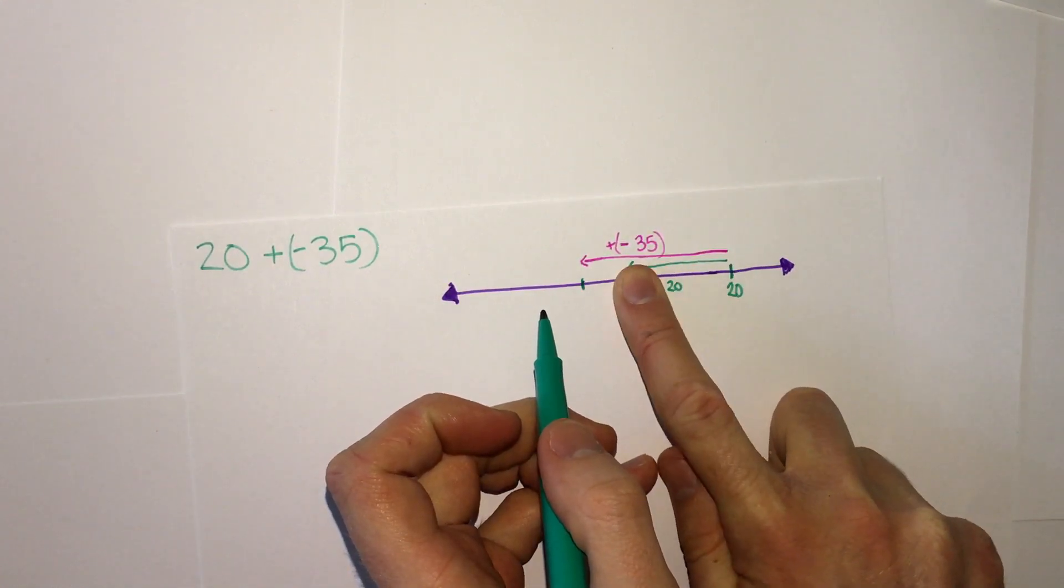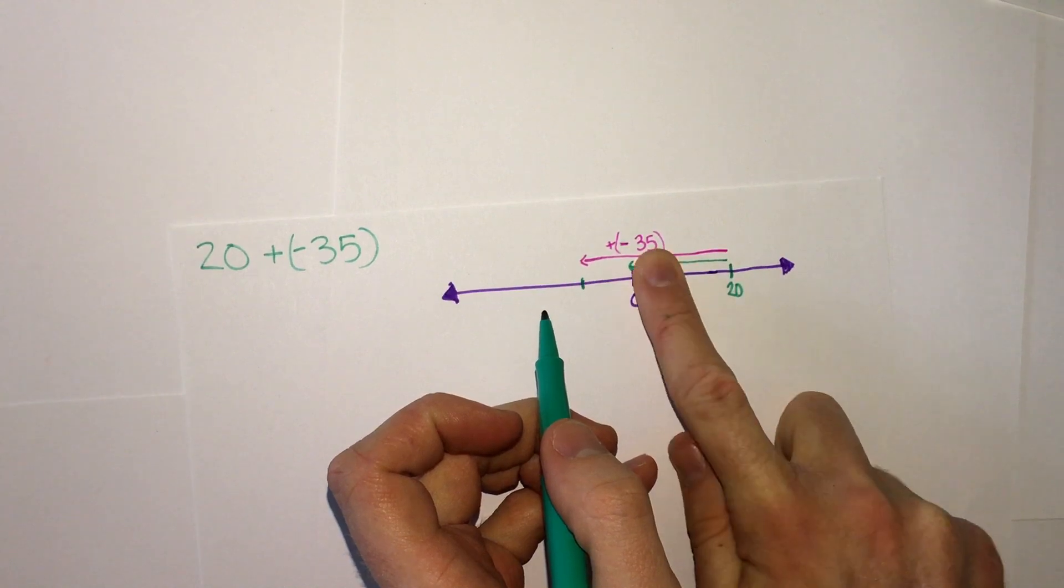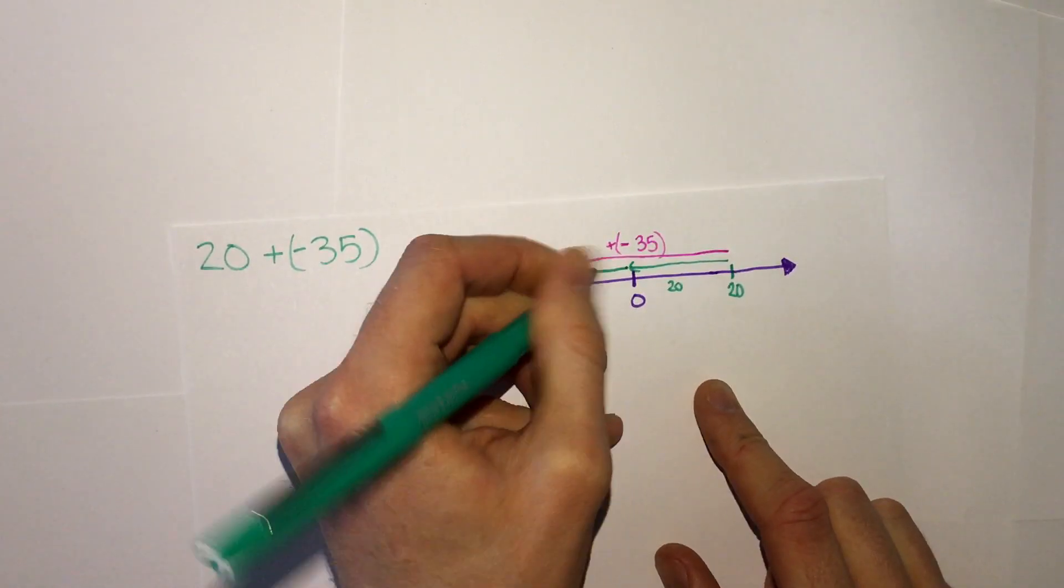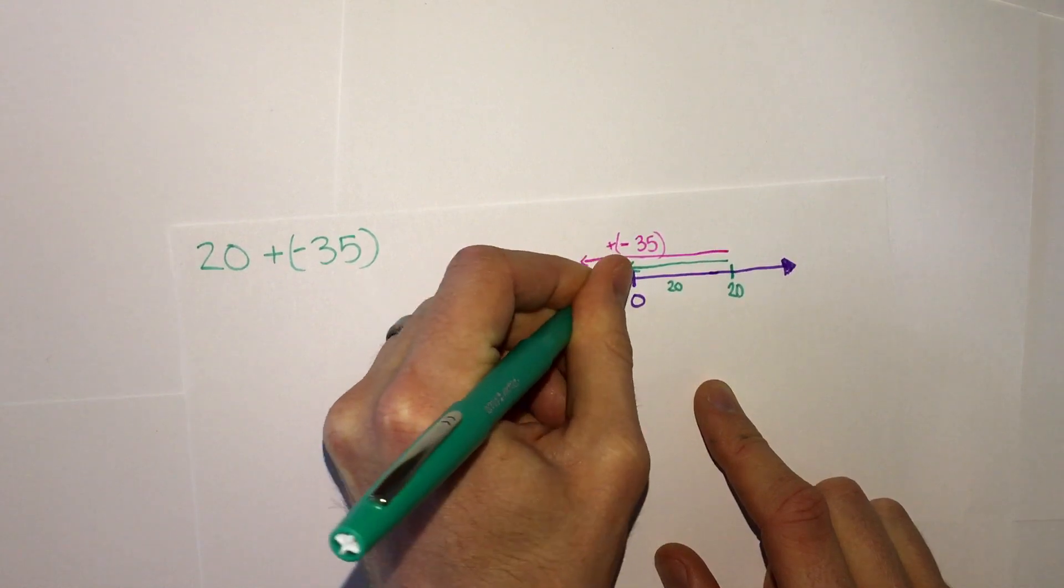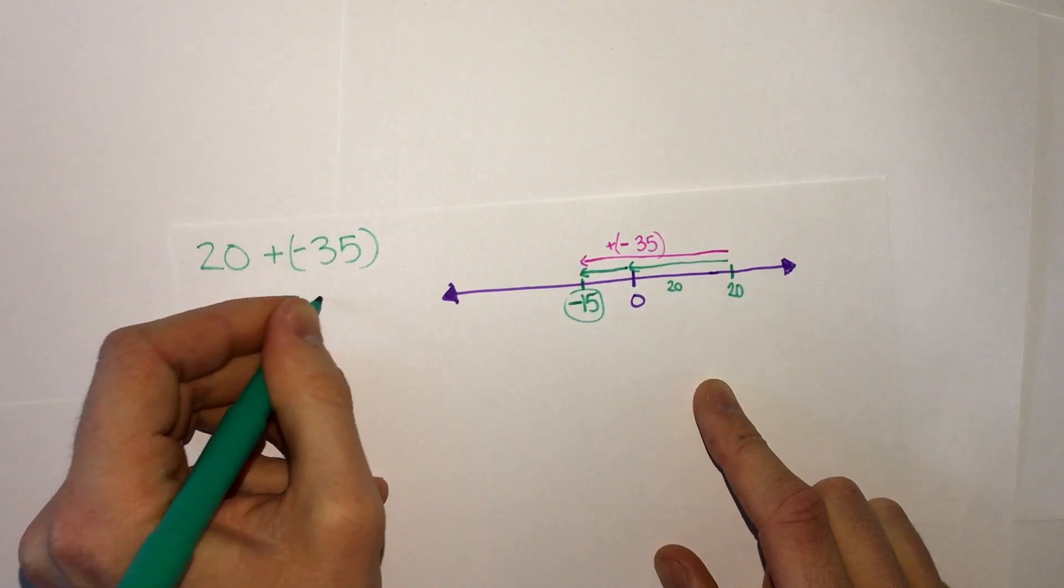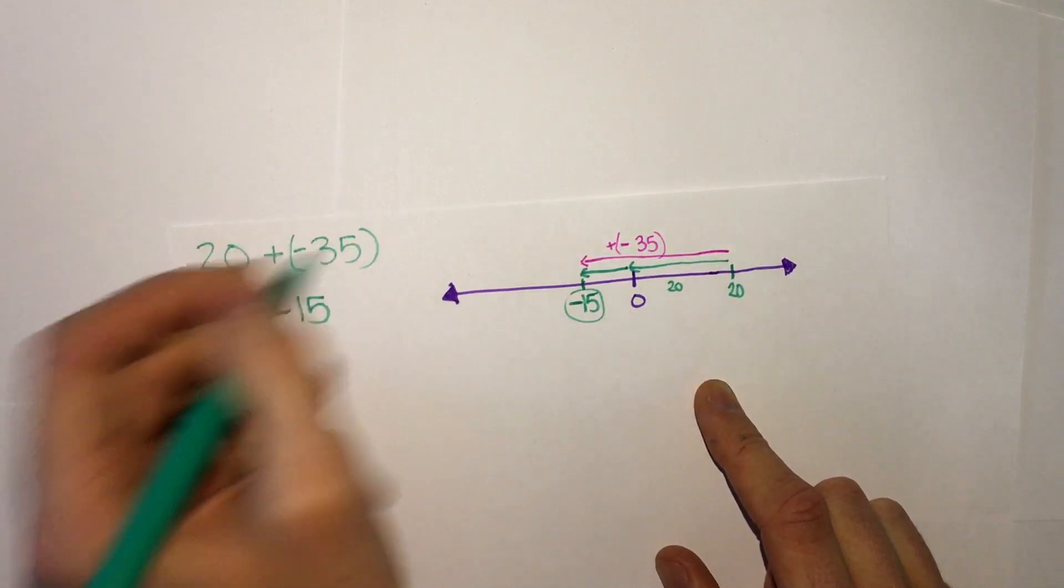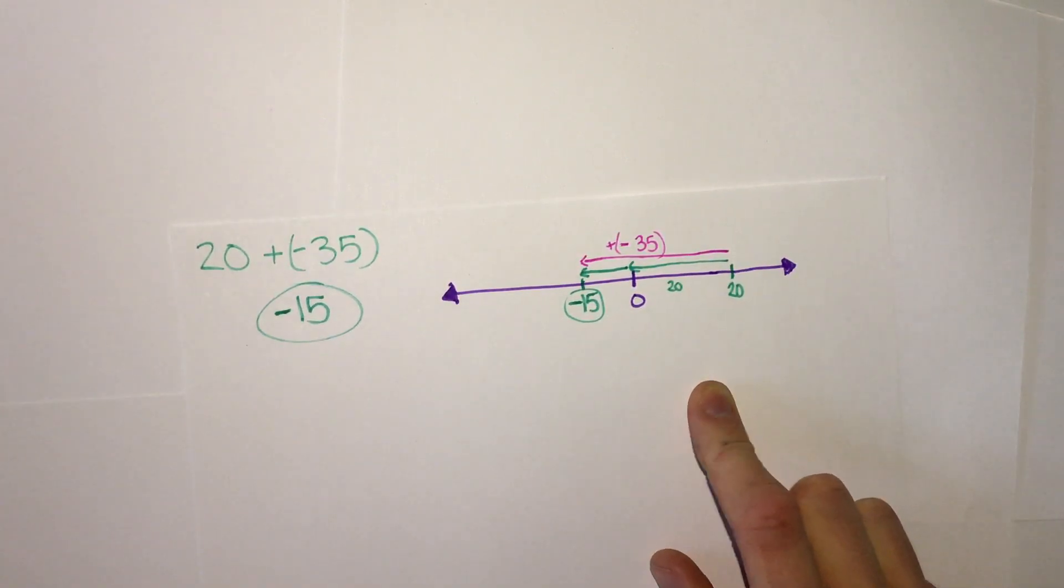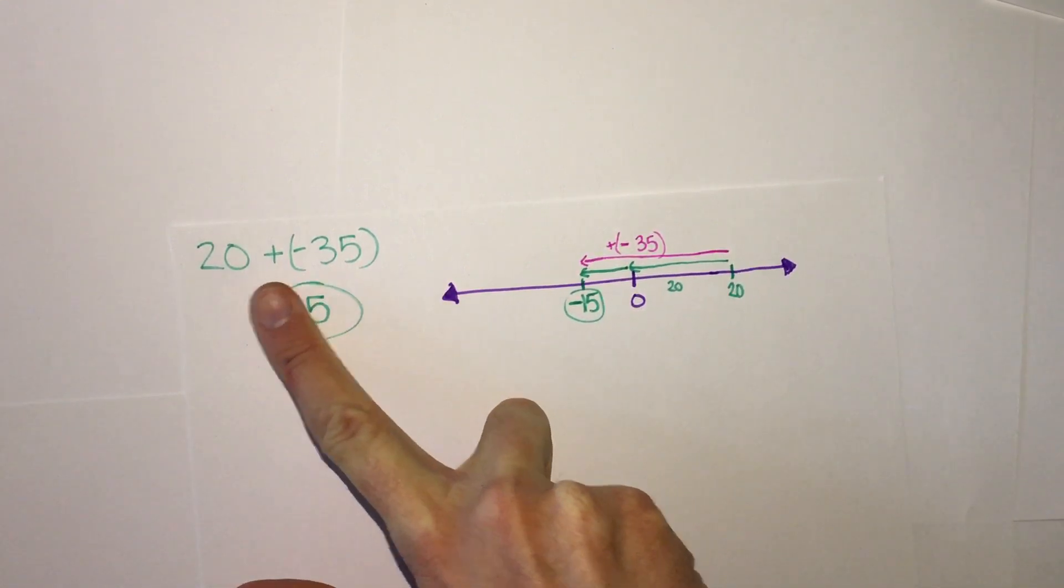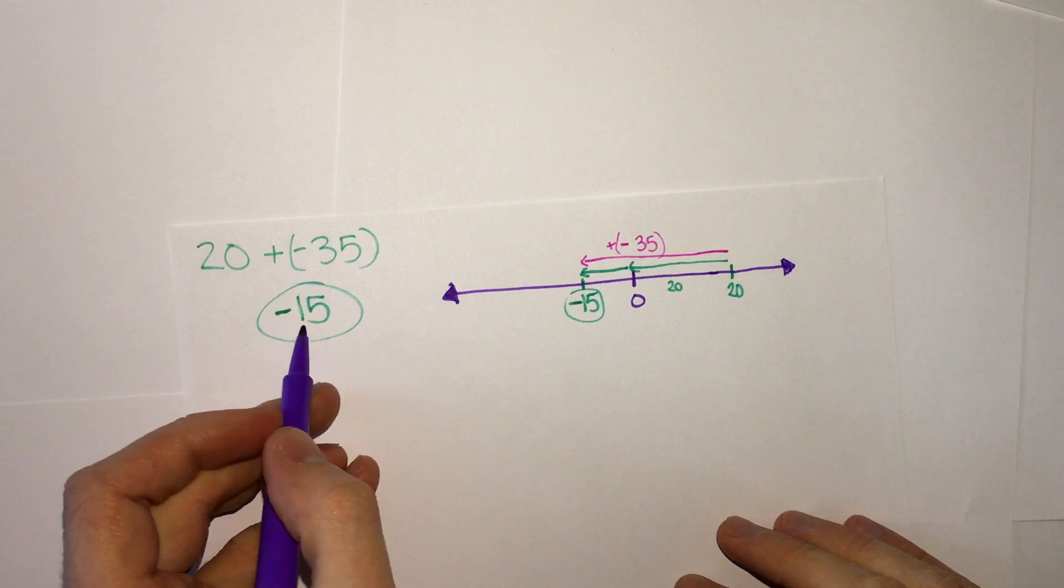Then if we keep going, how much is left over? If we take 20 away from 35, there's only 15 left, which means we would end up at negative 15. So this answer would be negative 15. And if you notice, 35 minus 20 is negative 15.